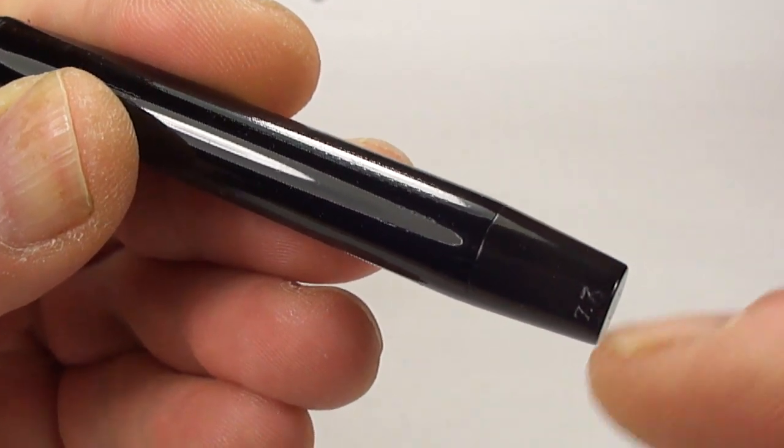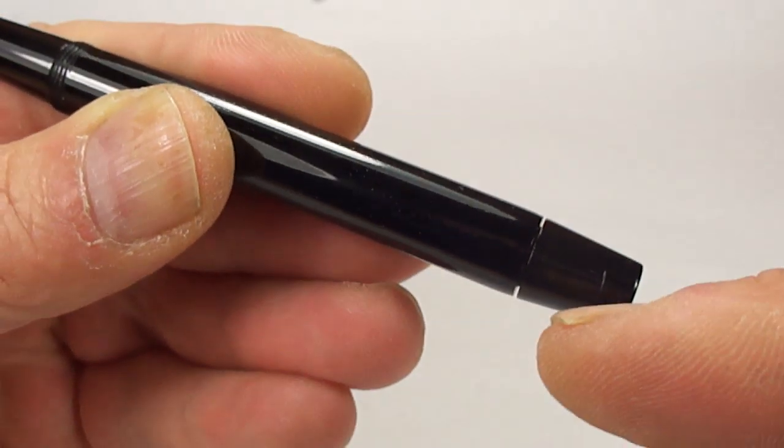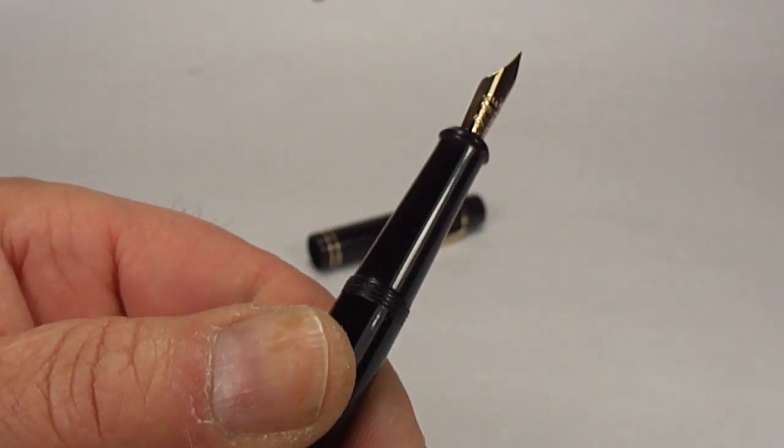And then, as we said earlier, in the direction of the arrow, what we do, we give it a turn back. And what that will do is open this shut-off valve inside the section. So, let's bring on a pad and let's do a little bit of writing.